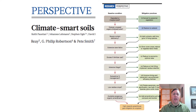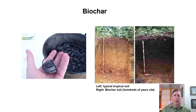Restoring degraded land can sequester CO2 in plants and soils. Depending on the current condition of the land, there are practices to optimize its carbon storage potential. Biochar is a type of charcoal used as a soil amendment. It can sequester carbon in soil for thousands of years, and also reduces pressure on forests by retaining soil fertility on farmland.